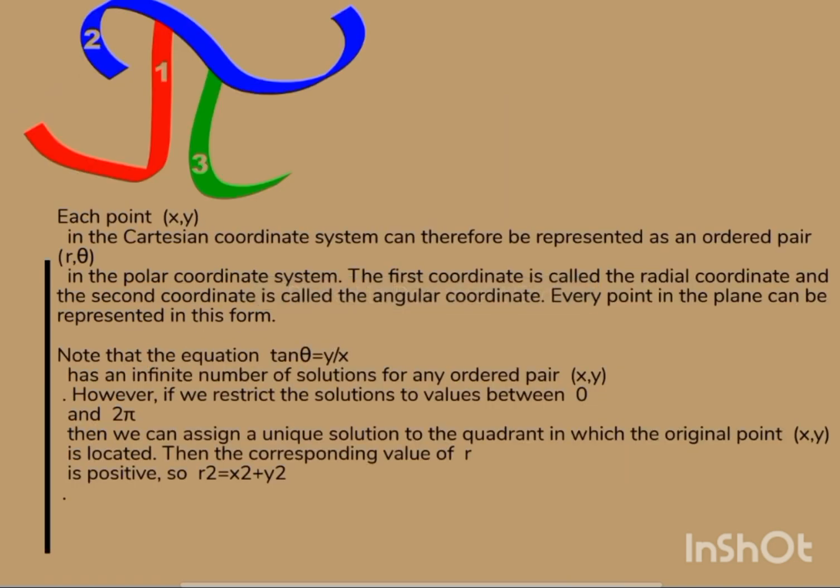Each point (x, y) in the Cartesian coordinate system can therefore be represented as an ordered pair (r, θ) in the polar coordinate system. The first coordinate is called the radial coordinate and the second coordinate is called the angular coordinate. Every point in the plane can be represented in this form.